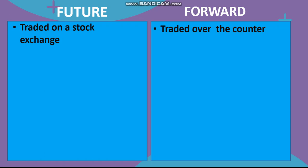The second difference is that the future contract is highly standardized — that is, the quantity, the quality of the product, the time of contract, and the date of delivery are all in a standard form. Forwards are not standardized; the contract is arranged in a situation suitable for the buyer and seller.